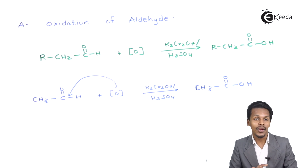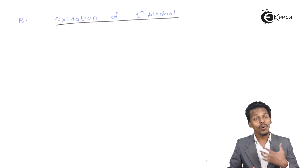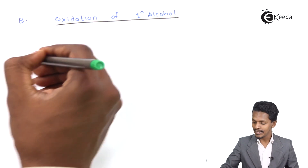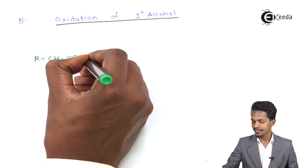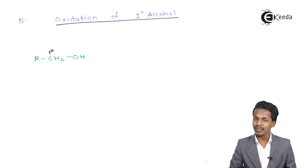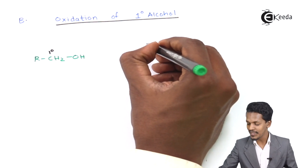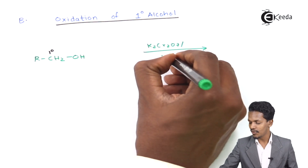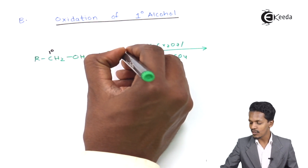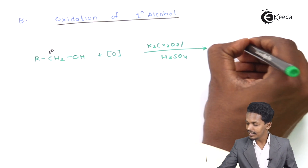That was the oxidation of aldehyde. Now let us move on to oxidation of primary alcohol. Here we discuss what happens when a primary alcohol undergoes oxidation. The general reaction starts with RCH₂OH — a primary alcohol, where the OH is attached to a primary carbon. When it undergoes oxidation in the presence of K₂Cr₂O₇ and H₂SO₄, nascent oxygen is provided and reacts with the alcohol.